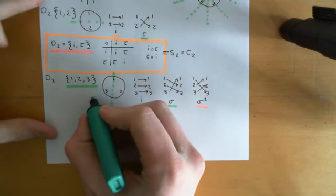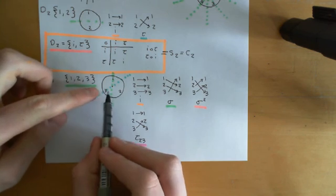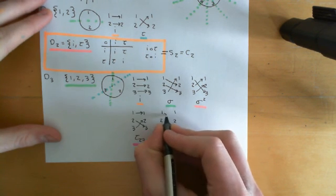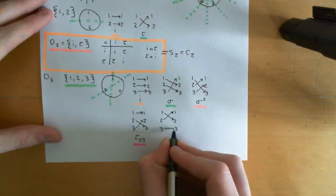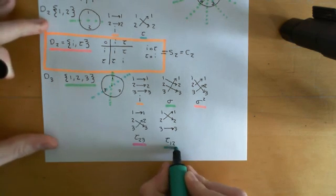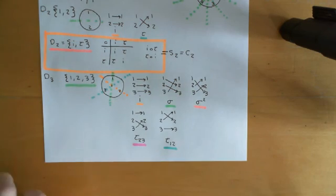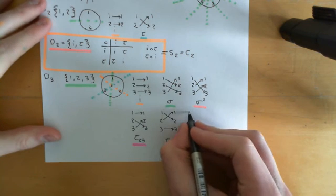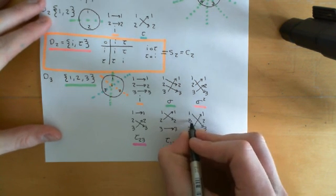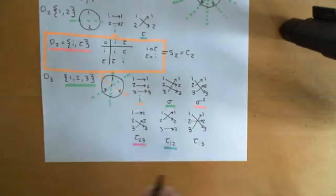Alternatively, we could flip down another line of symmetry through 3. Flipping through that line of symmetry holds 3 constant and swaps 1 and 2: 1 goes to where 2 is, 2 goes to where 1 is, and 3 remains constant. We denote that tau(1,2). Finally, there's one more line of symmetry through 2 — flipping down that line holds 2 constant and transposes 1 and 3, sending 1 to where 3 is and 3 to where 1 is. We call that tau(1,3).